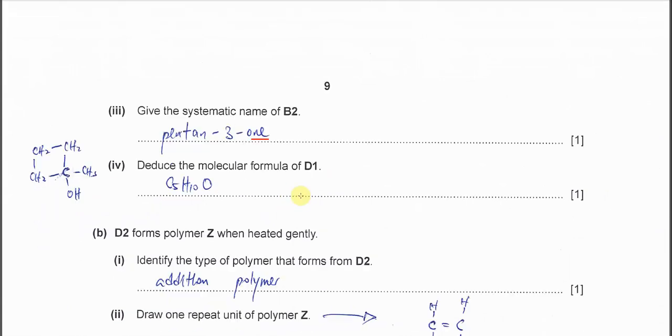Deduce molecular formula of D1. D1 is the cyclic C, has 5 C: 1, 2, 3, 4, 5. H, it has 1, 2, 3, 4, 5, 6, 7, 8, 9, 10. Oxygen has 1. So it's C5H10O.